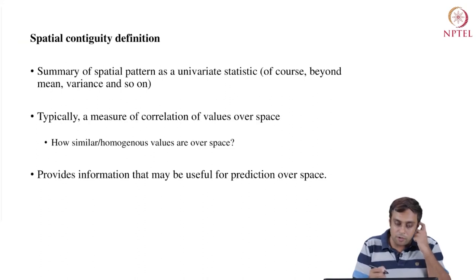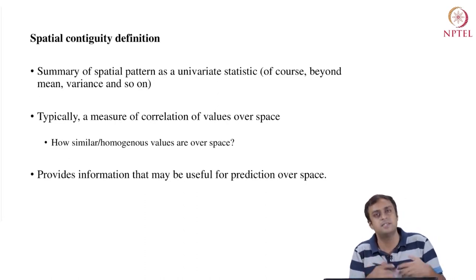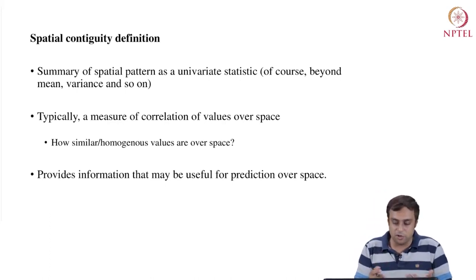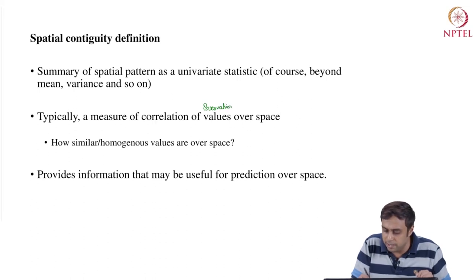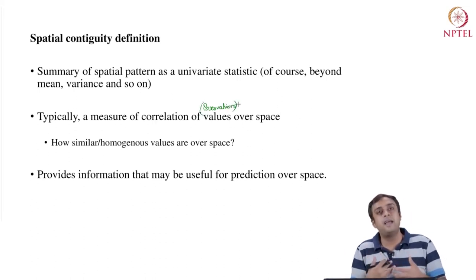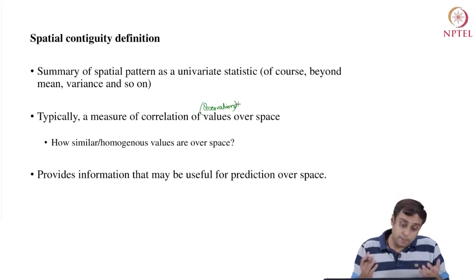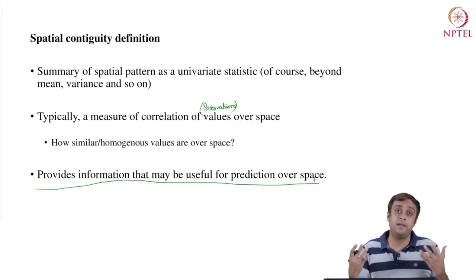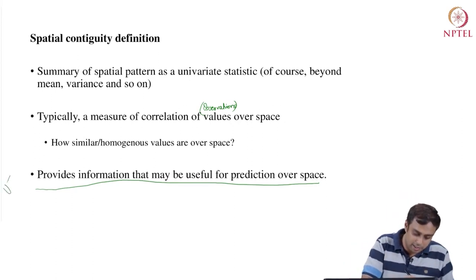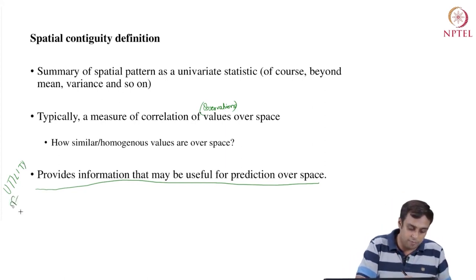Let's provide a definition of spatial contiguity. It is a summary of spatial pattern as a univariate statistic — just like mean and variance — but beyond mean and variance. It is typically a measure of correlation of values over space, where values means data observations, and it measures how similar or homogeneous those values are over space. Spatial contiguity provides information that will be useful for prediction in space — that is the utility of going through the process of estimating spatial dependence in data.